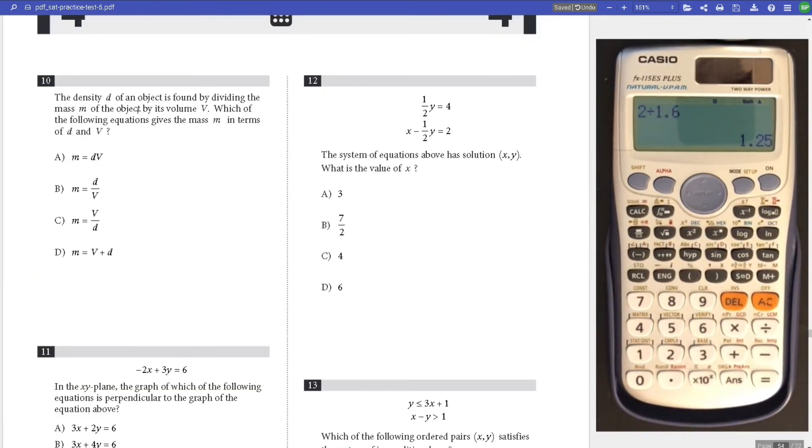Number 10, we have a density of object. The density of an object is found by dividing the mass by volume. Which gives M? Just times V over, M equals DV.